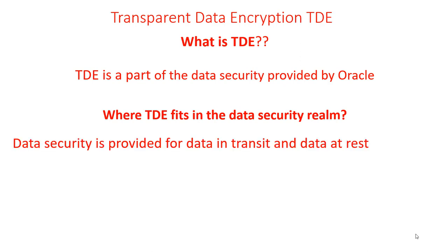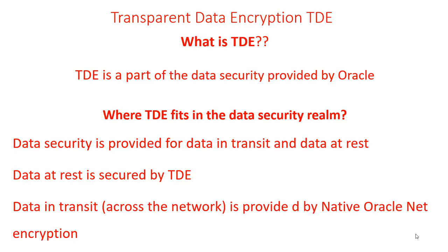Data security is provided for data in transit and data at rest. In Oracle database cloud services, data security in transit is achieved through network encryption, and data at rest is achieved through encryption of data stored in database and data files and even backups. So data at rest is secured by TDE, including backups, through encryption implemented through a key management framework. Data in transit is provided by native Oracle Net encryption.